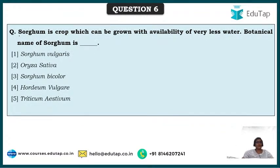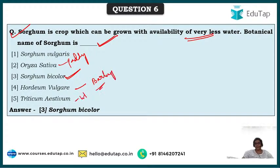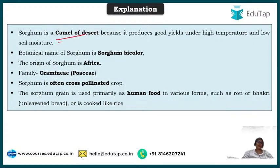Sorghum is a crop which can be grown with very little water. Its botanical name is Sorghum bicolor. It is called the camel of the desert because it produces good yields at high temperatures and low soil moisture. Origin of sorghum is Africa, family Graminae (Poaceae). Sorghum is often a cross-pollinated crop and is primarily used as human food. Hordeum vulgare is barley.